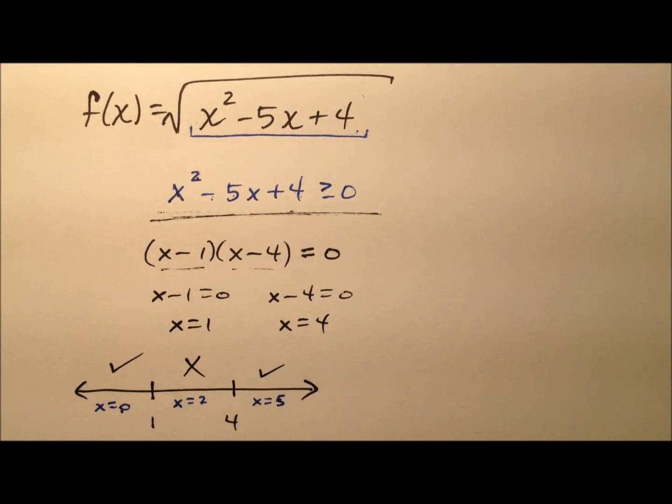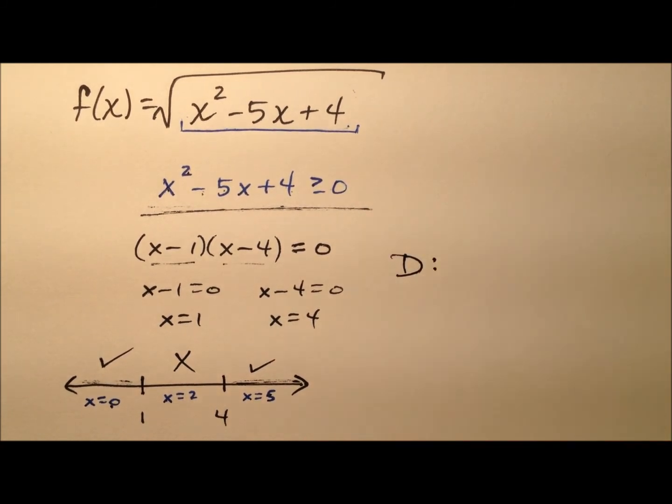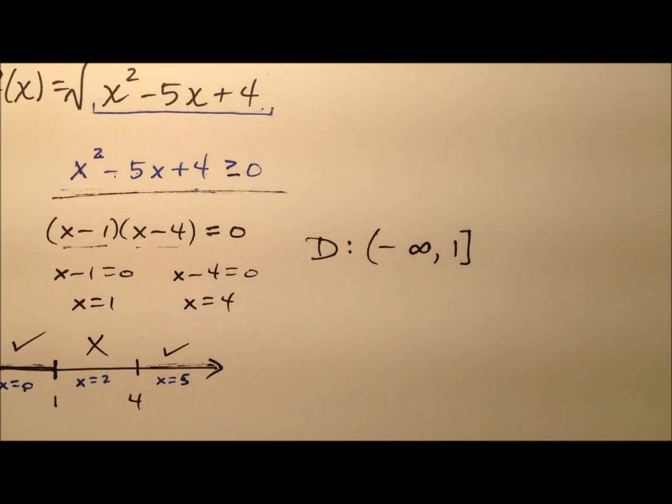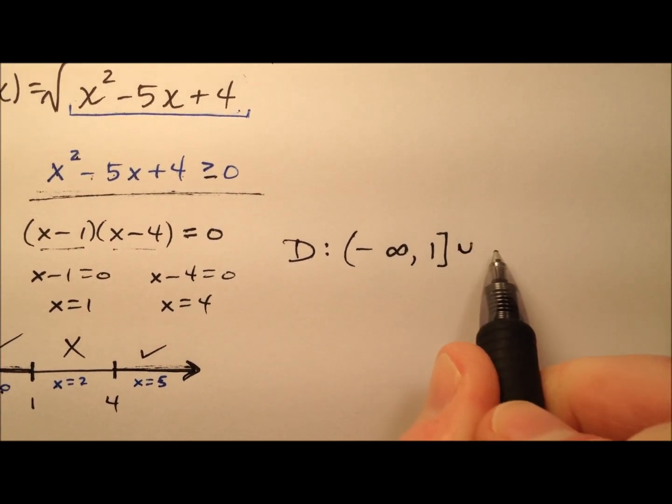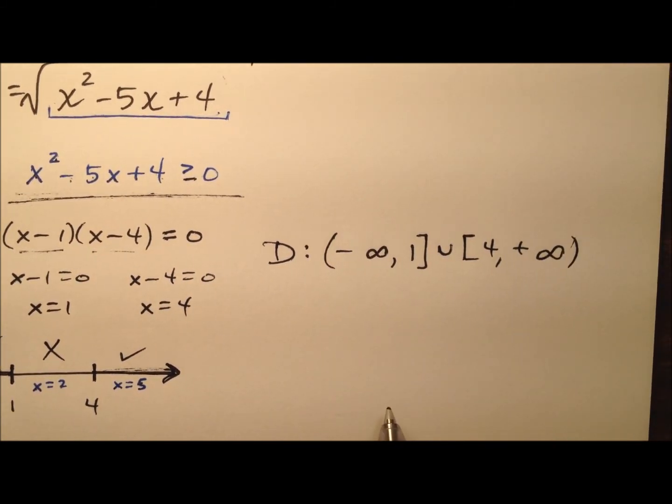We can see then that we have some regions that work and some regions that do not work. To write this final domain, let's do it in interval notation. The domain will be everything from 1 and down, so we'll say negative infinity up to 1, and that includes the 1 because we have greater than or equal to. Finally, it's going to be everything starting at 4 and going up to infinity. So we'll say union starting at 4 and going up to infinity, and the infinities get parentheses.